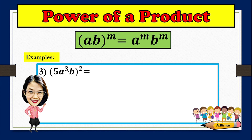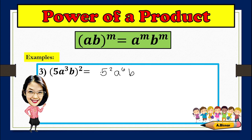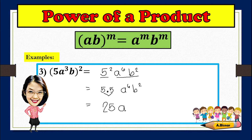Another example: the square of 5a cubed b. The exponent of 5 is 1, so 1 times 2 is 2. Next is a — the exponent of a is 3, so 3 times 2 is 6. Now b — the exponent of b is 1, times 2 gives 2. Let us simplify 5 squared: 5 times 5. So the final answer will be 25a to the 6, b squared.